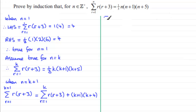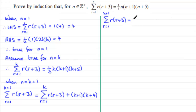So the sum from r equals 1 to k plus 1 of r multiplied by r plus 3 equals — using our assumption — a third k times k plus 1 times k plus 5, plus the k plus 1 term, which is k plus 1 multiplied by k plus 4.